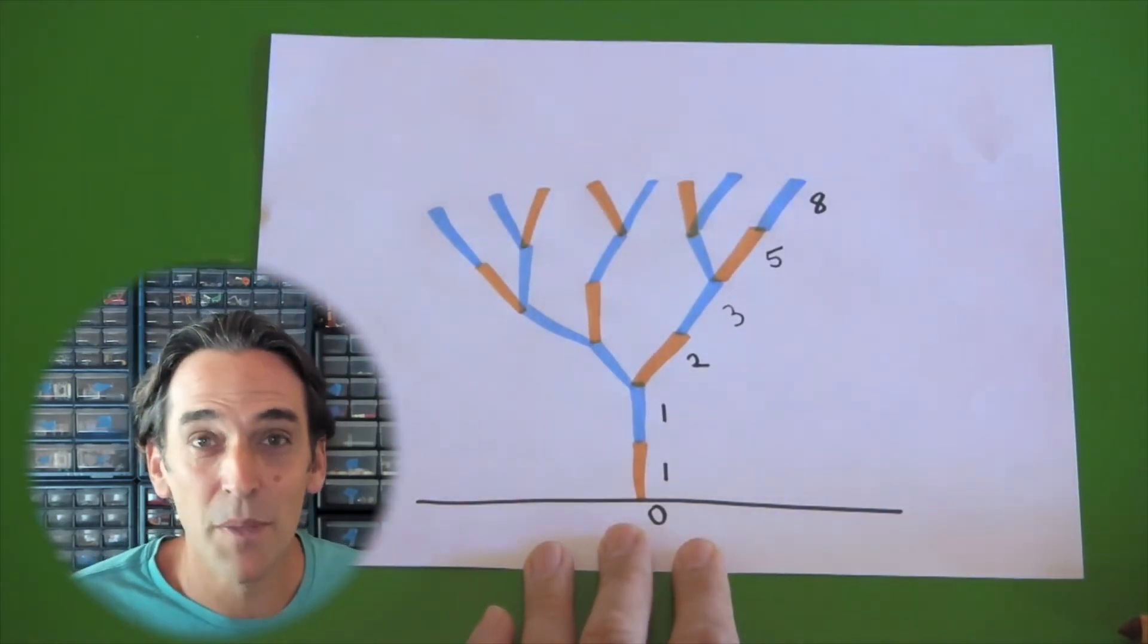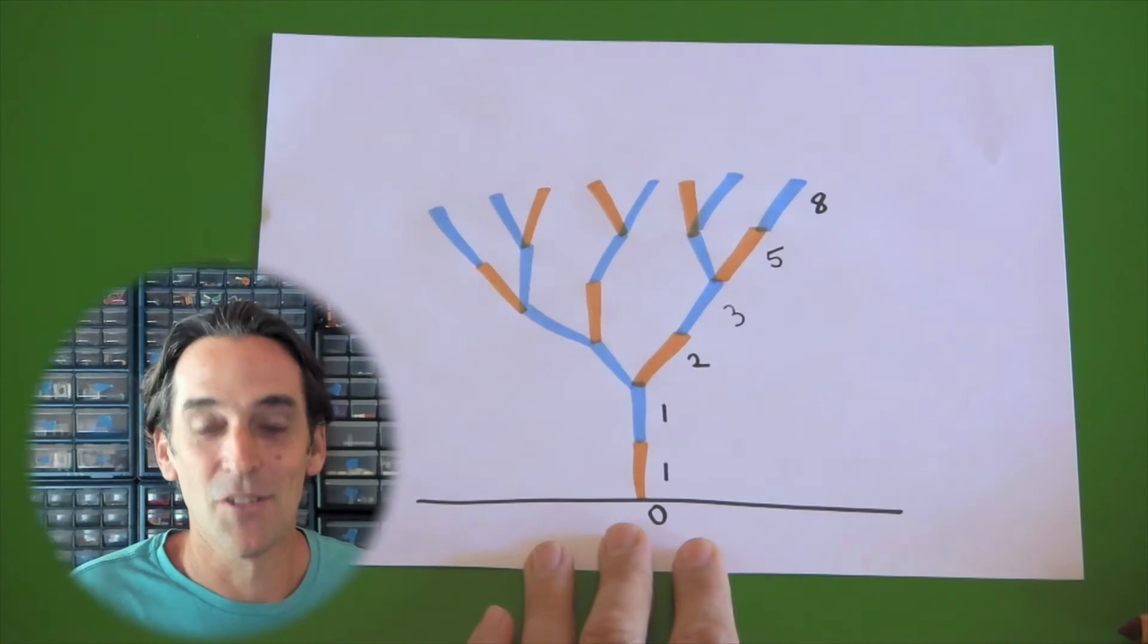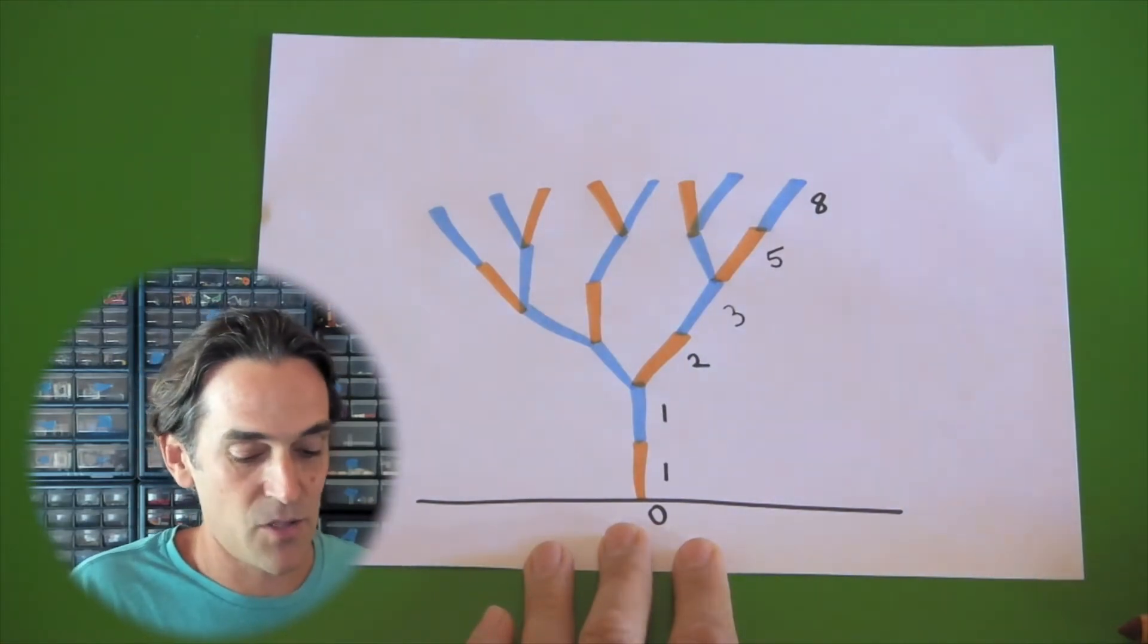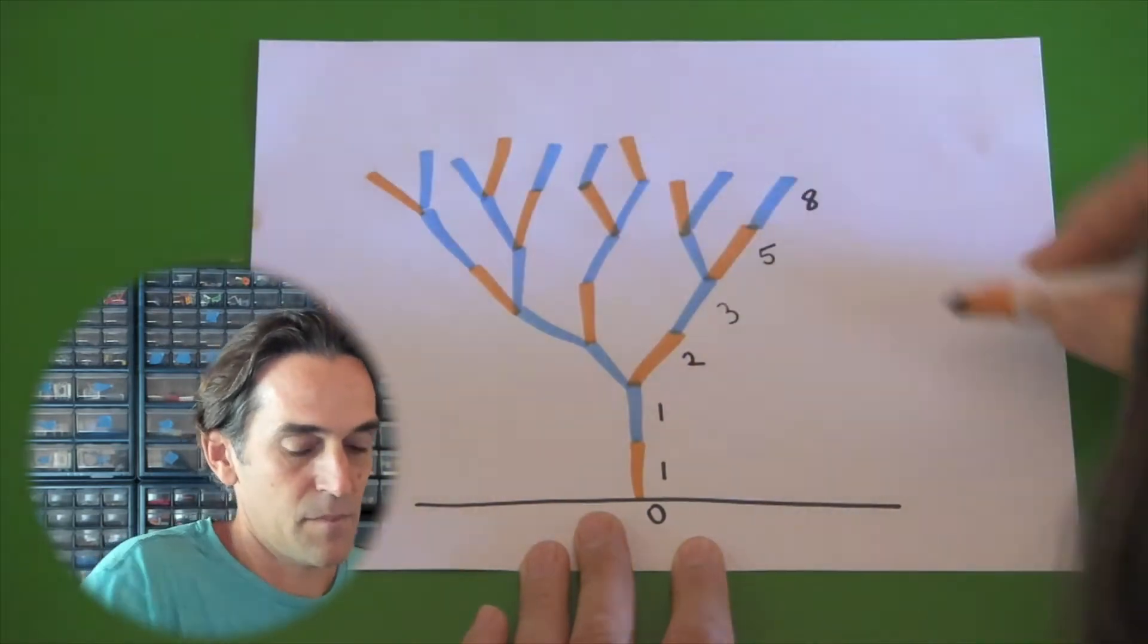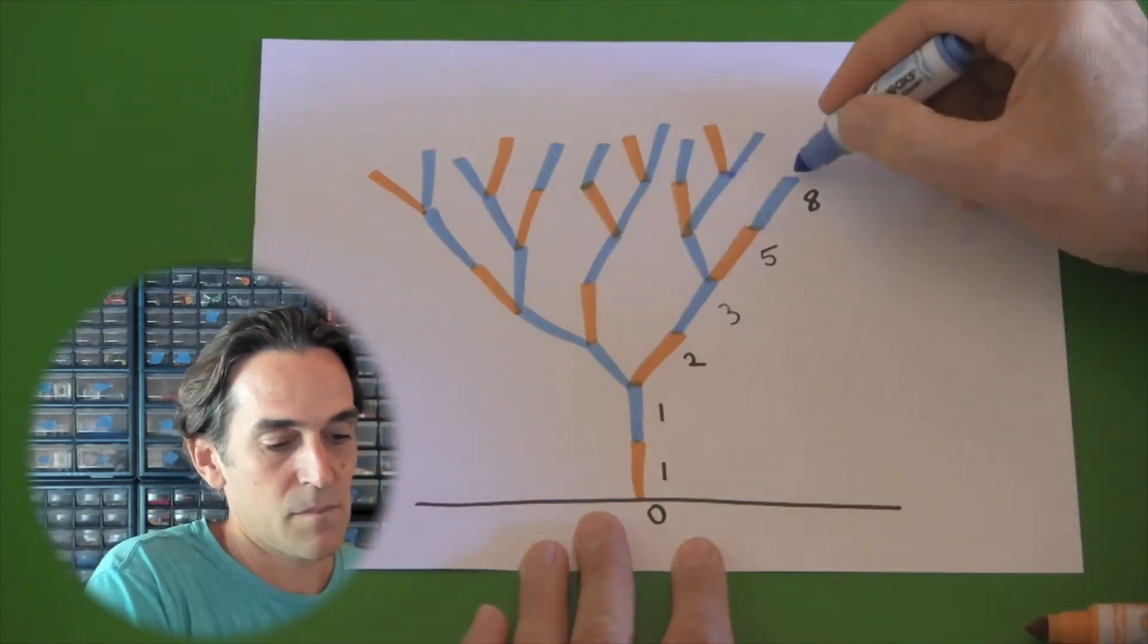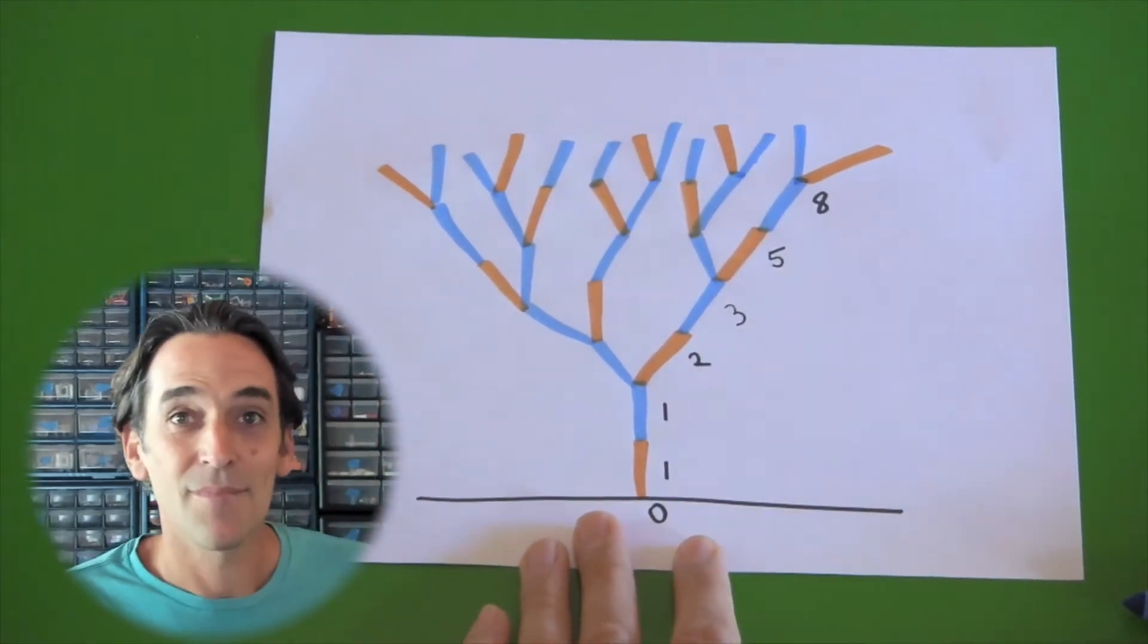What should the next level be? Five plus eight, 13. Let's do one more level and see if that holds true. All right, let's count them.